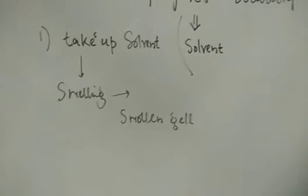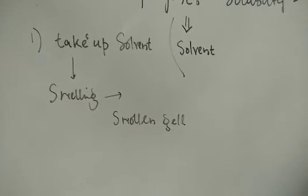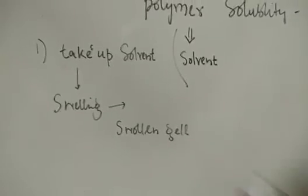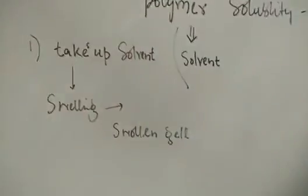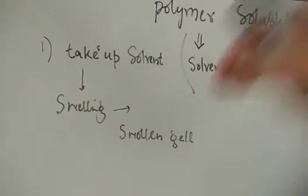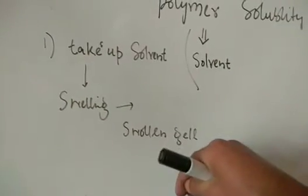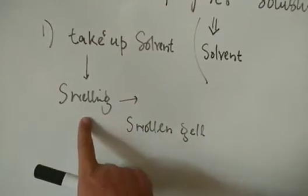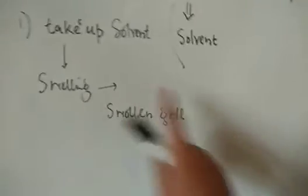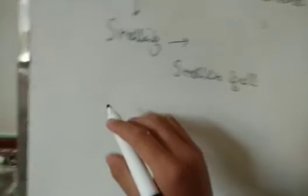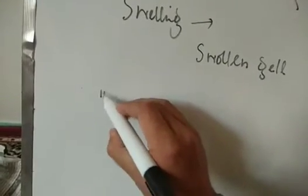Normal solutes — whether ionic or covalent compounds — dissolve directly, but this is not the behavior in the case of polymers. For polymers, once you dissolve your polymer in a given solvent, it takes up the solvent and gets swelled up, forming a swollen gel — a gel-like material. This is step number one.